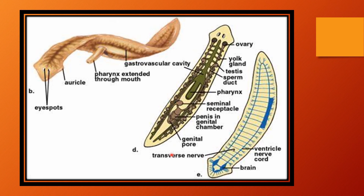Here is the transverse nerve, the ventral nerve cord, and the brain. This is the genital pore with the penis. Here is the pharynx, the testes, the sperm duct, the gland, and the ovary. Overall, this anatomy shows that Planaria is a hermaphrodite animal.